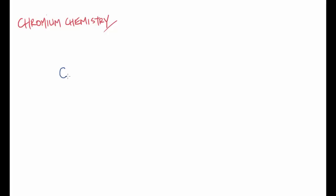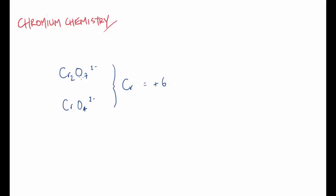We've got the dichromate ion, Cr₂O₇²⁻, and there's also the chromate ion, CrO₄²⁻, which is similar because it's got chromium and oxygen. A nice way to remember these is they have the same oxidation state - in both formats, the chromium oxidation state is +6. So we have +6, minus 14, giving 2⁻, and +6, minus 8, giving 2⁻.